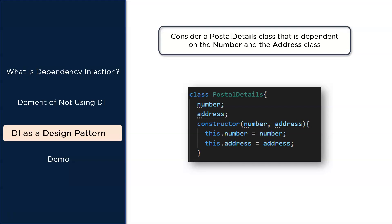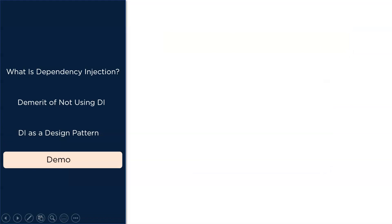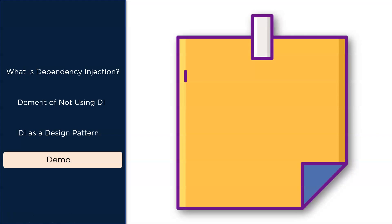Now that you know what dependency injection is and how vital it is, let's look at a simple demonstration. Services, classes, modules, and components are all benefactors of dependency injection. In the demo, I'm going to show how dependency injection can be used with the help of services and injecting these services into classes.